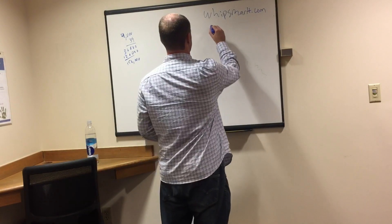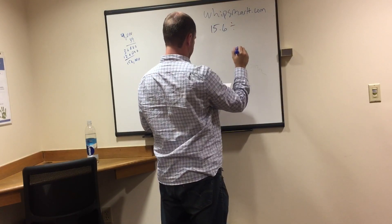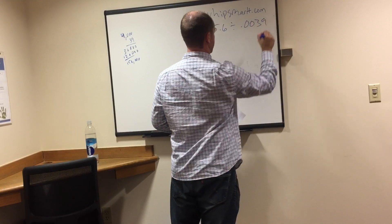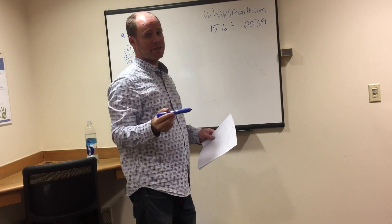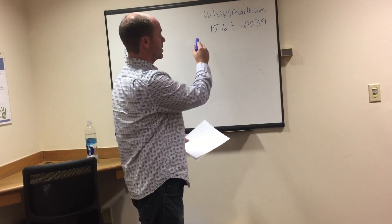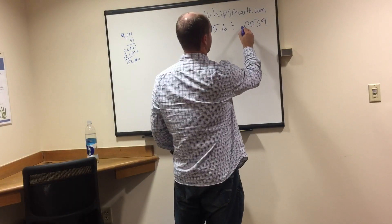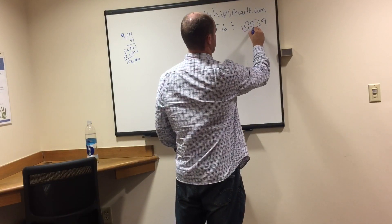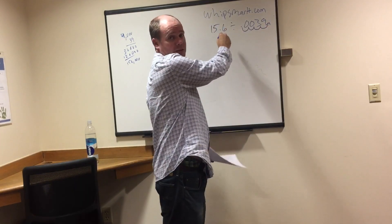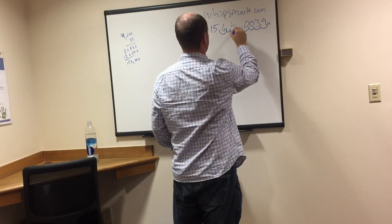Decimal division is first. So let's look at this one: 15.6 divided by 0.0039. You get something like this — it's a common ASVAB question. The way we do this, we need to get rid of the decimal point. The rule is if we go four decimal places here to get rid of this decimal, we've got to do the same thing on this side.